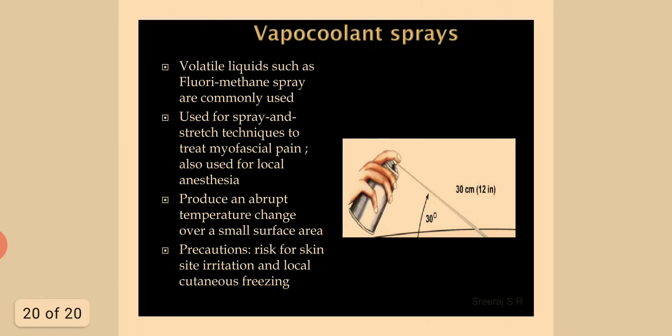Vapor coolant sprays use volatile liquids such as fluoromethane, which are commonly used for spray-and-stretch techniques to treat myofascial pain and also for local anesthesia. They produce an abrupt temperature change over a small surface area. Precaution: risk of skin site irritation and local cutaneous freezing.